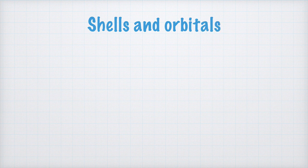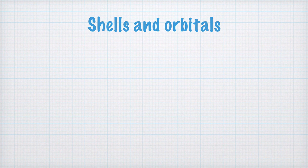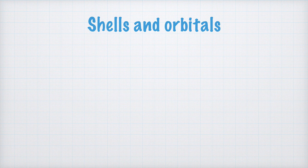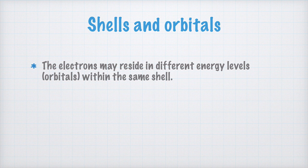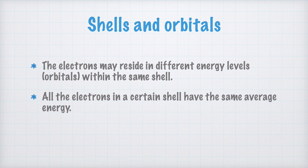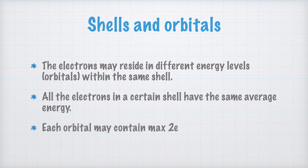You already know that different shells can contain different number of electrons. In each shell, the electrons have the same average energy. But there are, within each shell, different sublevels. These sublevels are called orbitals. The electrons may reside in different energy levels, orbitals, within the same shell. Also, all the electrons in a certain shell have the same average energy. For now, you must also keep in mind that each orbital may only contain one or two electrons.